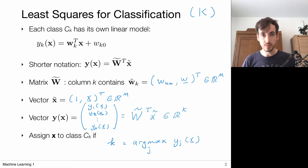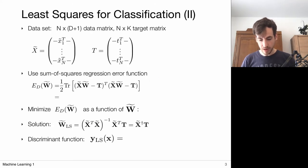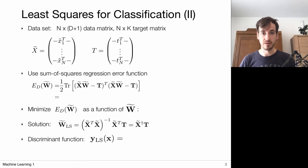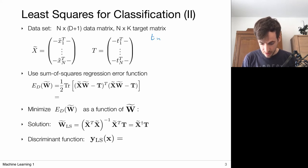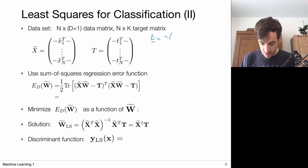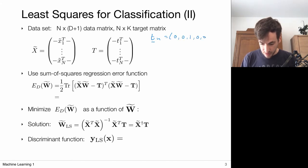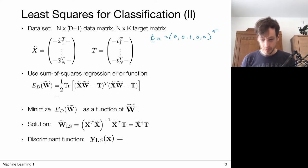That's how we use linear models for classification. We need to minimize the least squared errors, so we need target values. For this, we're going to use one-hot encodings for the classes — each target consists of zeros and ones. This particular vector would encode for the third class.